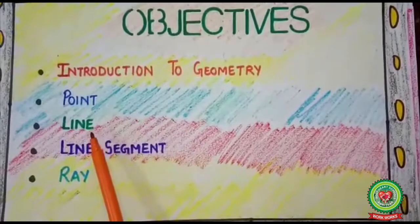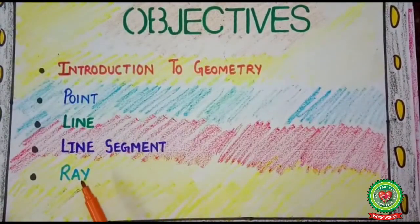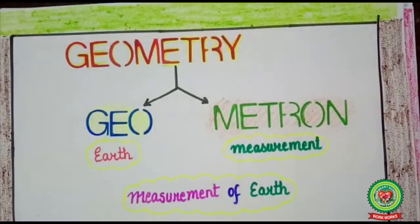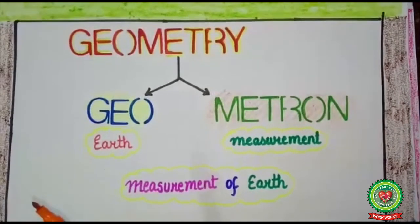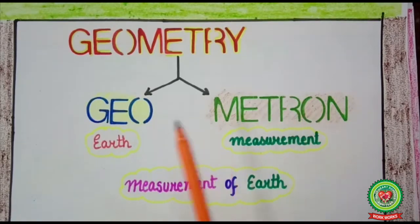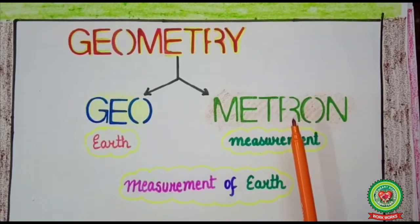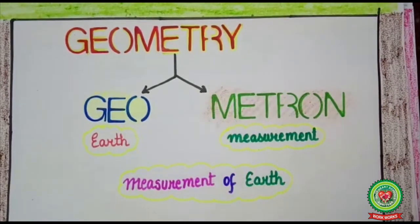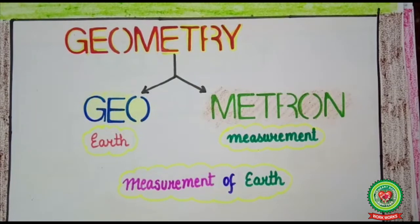Now let's start with geometry. What is geometry? The word geometry has been derived from two Greek words: geo and metrin. Geo means earth, metrin means measurement. Therefore, measurement of earth is known as geometry. In ancient times geometry was used in land measurement only, but now it is widely used in various fields of our daily life.